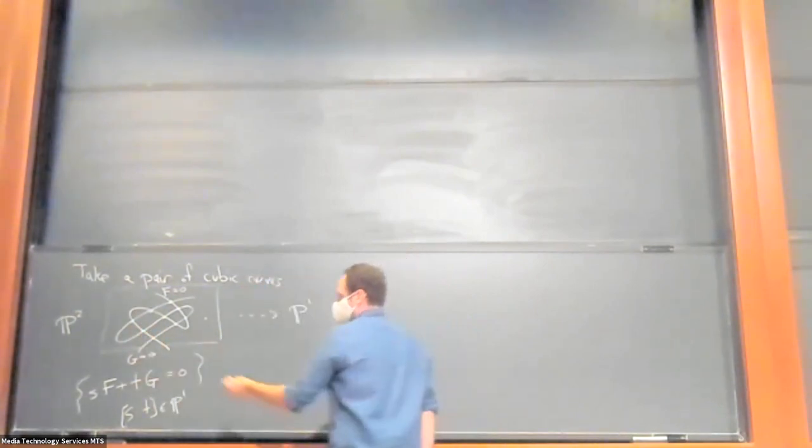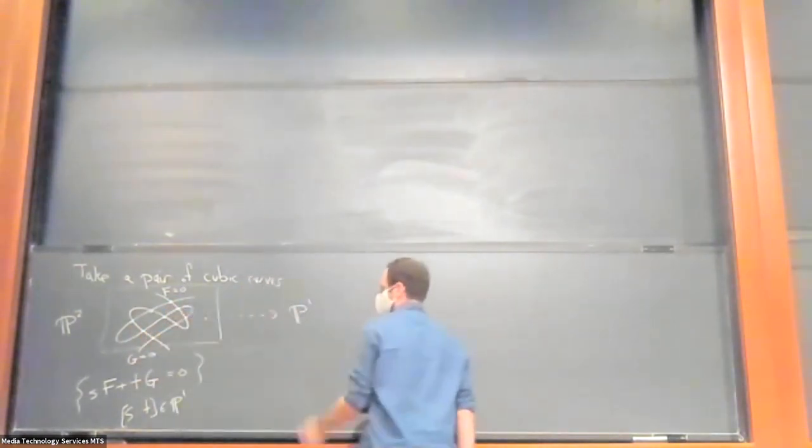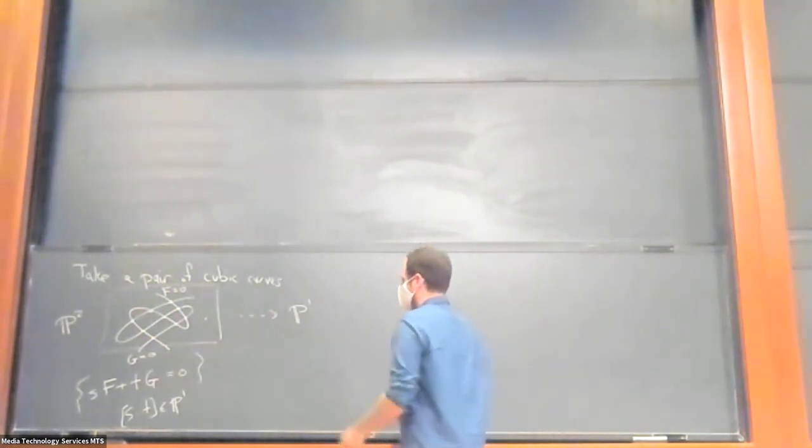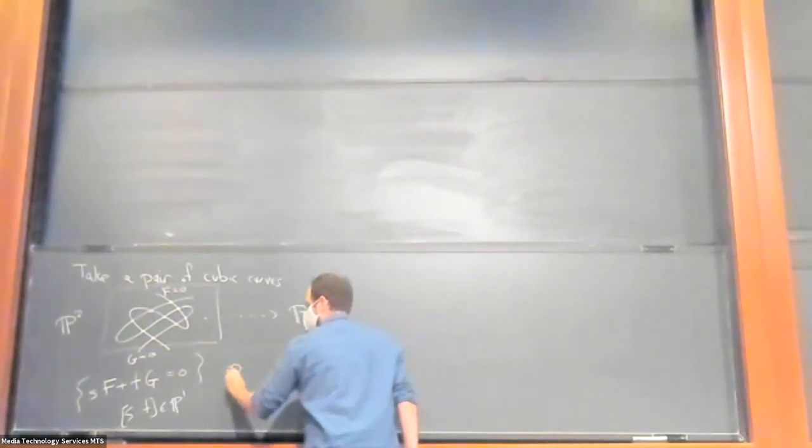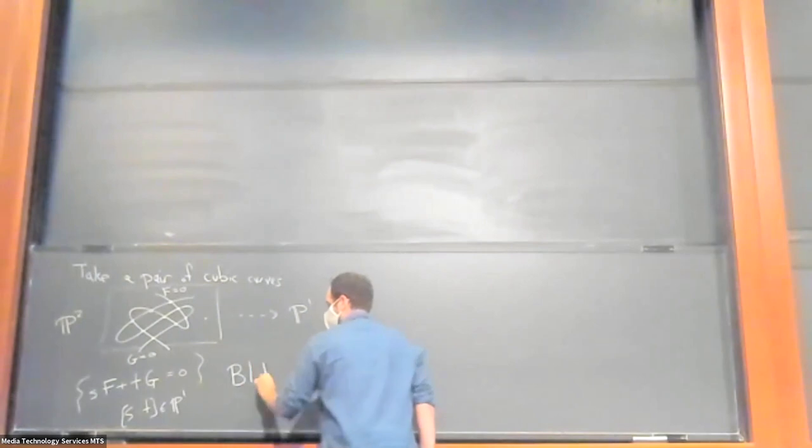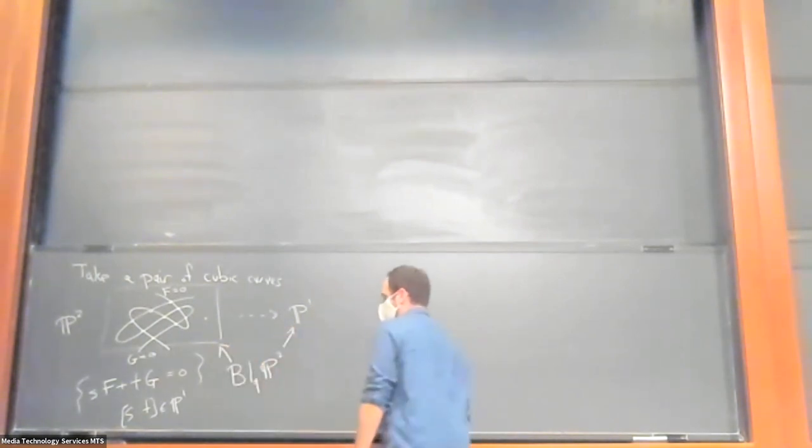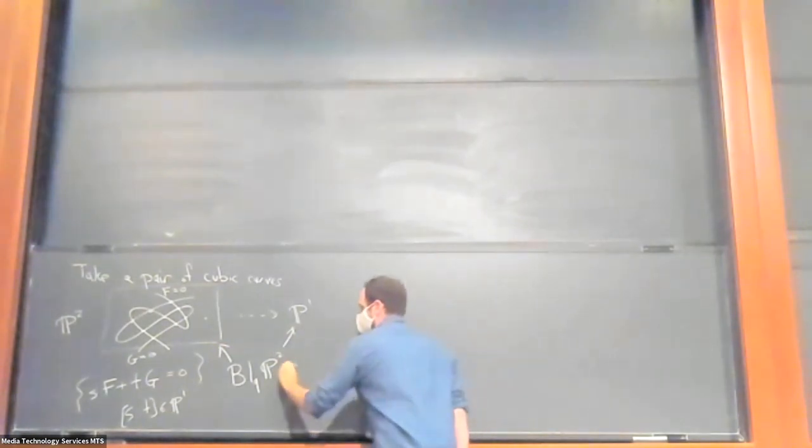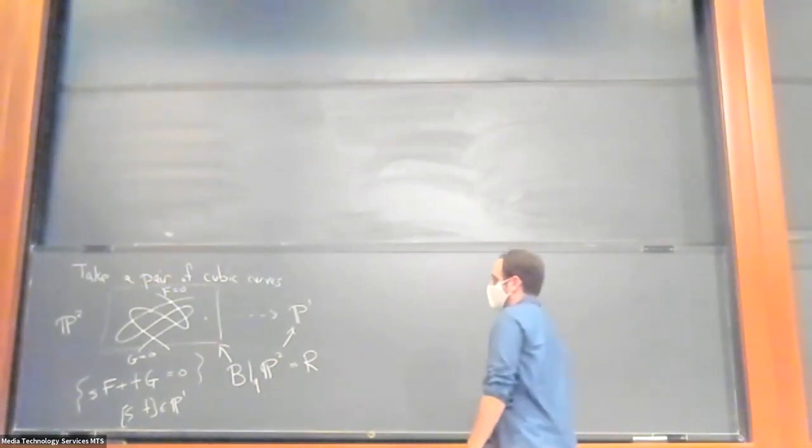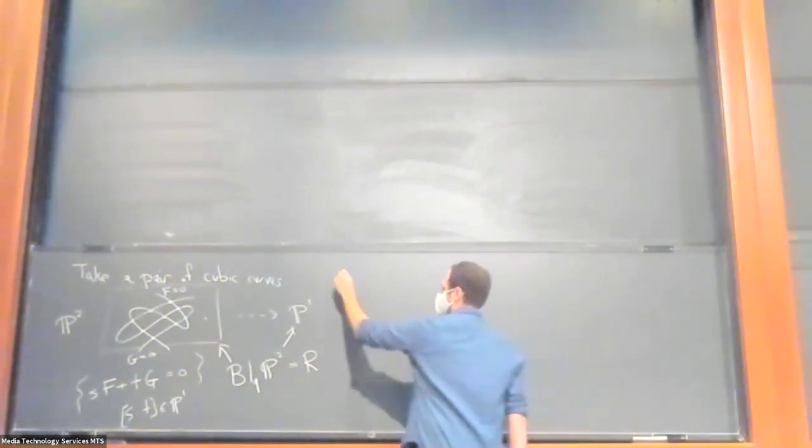And so to resolve this rational map to a regular map, you need to blow up those points. So we blow up P2 at these nine points. This actually gives you a regular map to P1, and this is an elliptic fibration. So this R, I'll call it R because it's a rational surface, and it's fibered over P1 by elliptic curves.